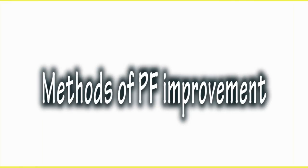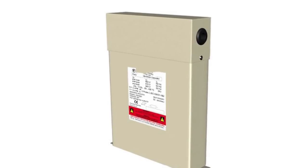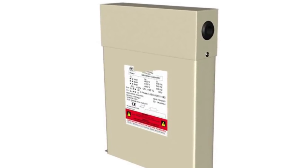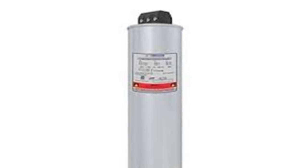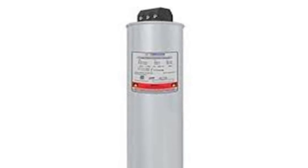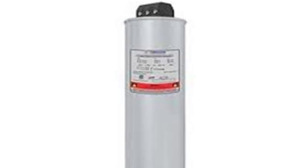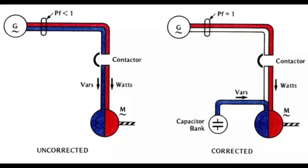The first method is the static capacitor. The power factor can be improved by connecting capacitors in parallel with the equipment operating at lagging power factor. The capacitor, generally known as a static capacitor, draws a leading current and partly or completely neutralizes the lagging reactive component of load current, thereby raising the power factor of the load.